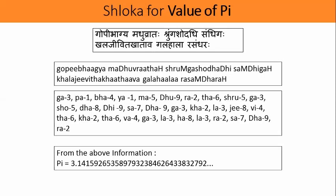Vedic literature gives us information about the lifestyle of people of that age. The Rigveda was written seven thousand years ago, which tells us that our ancestors in India knew the value of pi and were using it in daily life seven thousand years ago.